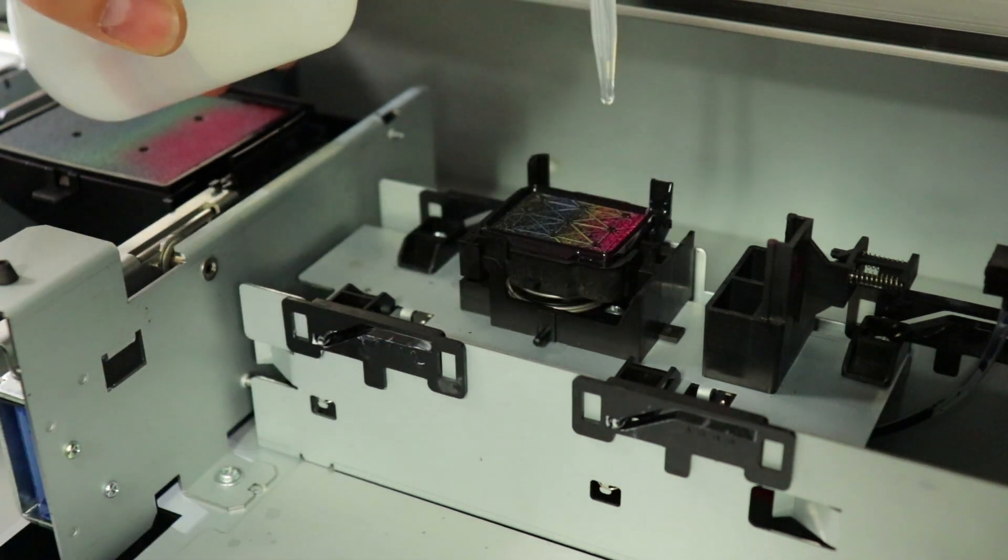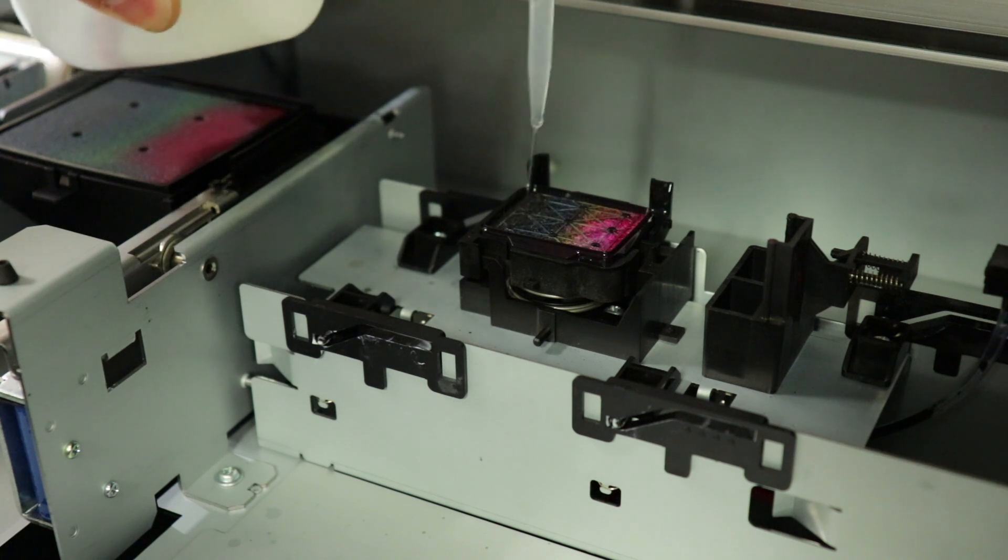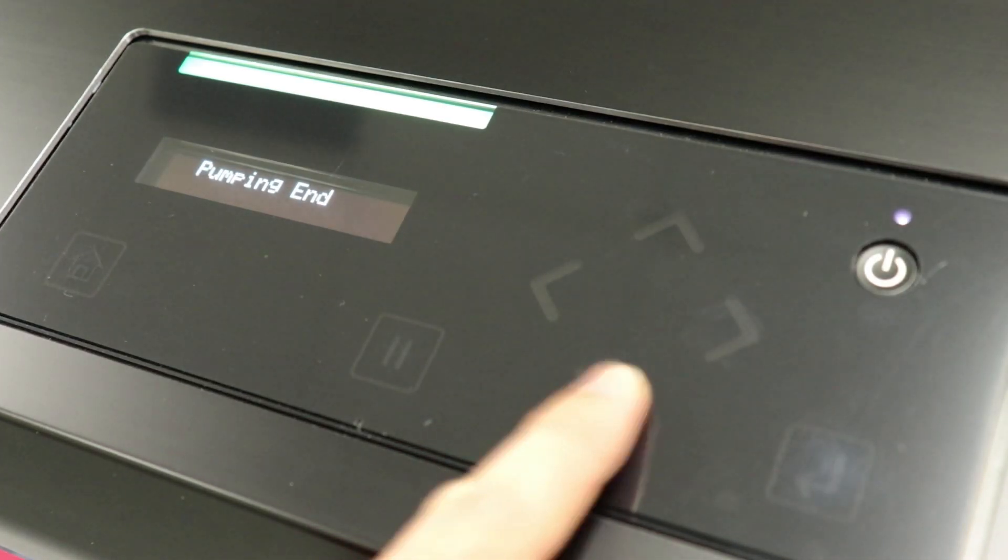While the pump is running, go ahead and take cleaning solution and flood the cap. To turn off the pump, go ahead and press the down arrow again.